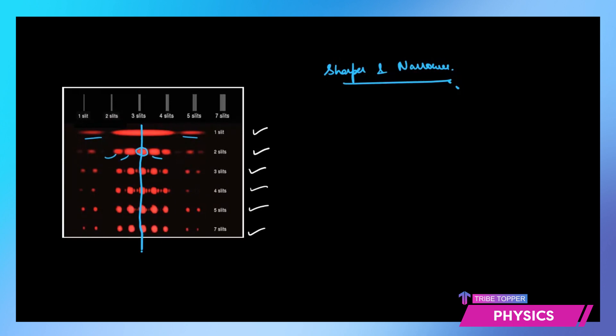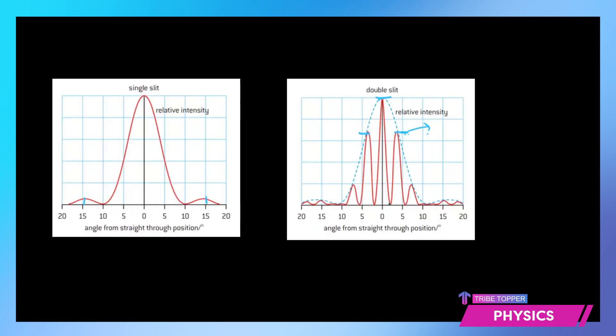The next maximas are also a bit brighter and that brightness reduces as we go on further. So we would say that the intensity of the fringes remains almost the same, but the bright fringes become narrower.